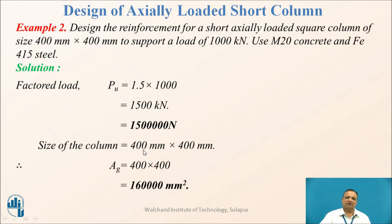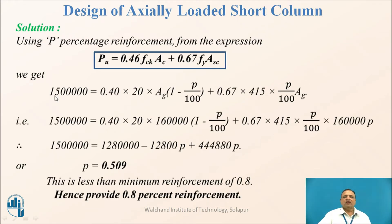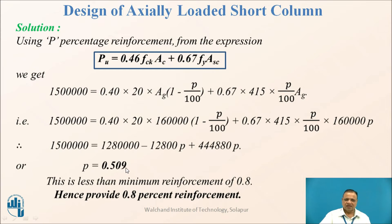Since the size of the column is given as 400 mm × 400 mm, Ag = 16 × 10⁴ mm². Using the IS456 equation Pu = 0.4·fck·Ac + 0.67·fy·Asc, where Ac = Ag(1 − p/100) and p is the percentage of steel, we find the required percentage of steel is 0.509%, which is less than the minimum reinforcement of 0.8%. Hence, provide 0.8% reinforcement.